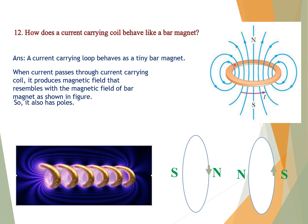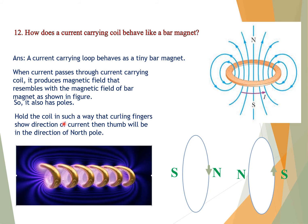The current-carrying coil also has poles — a north pole and a south pole. Hold the coil so that the curling fingers show the direction of current; the thumb will point in the direction of the north pole. One side of the coil shows the north pole and the other shows the south pole. So this current-carrying loop behaves like a bar magnet with poles on each side.